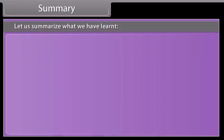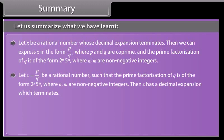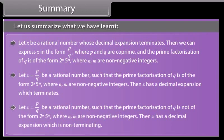Summary: Let x be a rational number whose decimal expansion terminates. Then we can express x in the form P/Q where P and Q are co-prime, and the prime factorization of Q is of the form 2ᴺ × 5ᴹ, where N and M are non-negative integers. If x = P/Q and Q is of the form 2ᴺ × 5ᴹ, then x has a terminating decimal expansion. If x = P/Q and Q is not of the form 2ᴺ × 5ᴹ, then x has a non-terminating repeating decimal expansion.